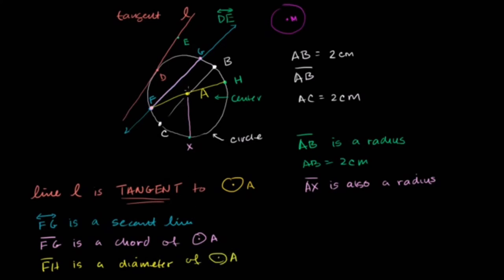You've probably seen this in many problems before. A diameter is made up of exactly two radii. A radius connects a point to the center — so you have one radius connecting F and A, and another radius connecting A and H. So a diameter is made up of these two radii, and the length of a diameter is going to be twice the length of a radius. The length of FH is equal to the length of FA plus the length of AH.